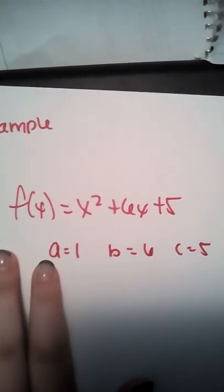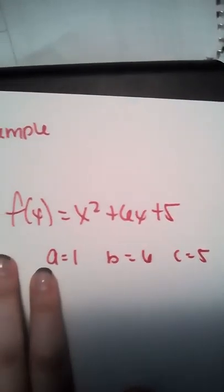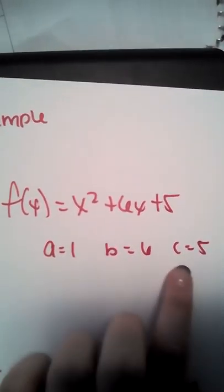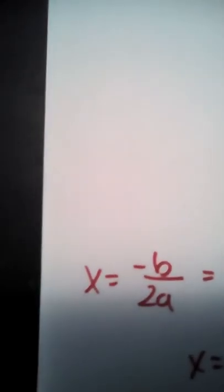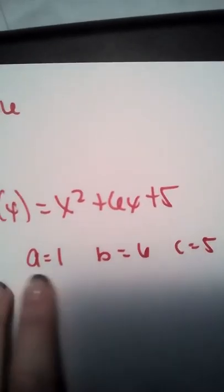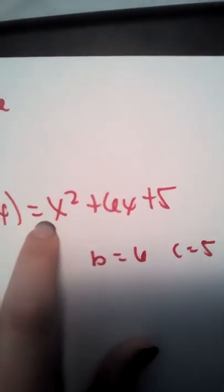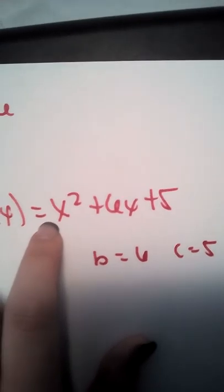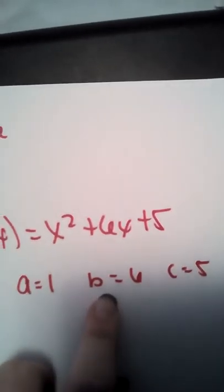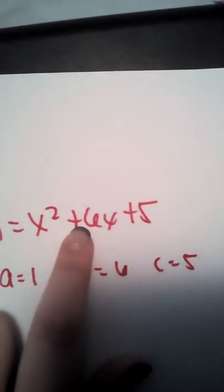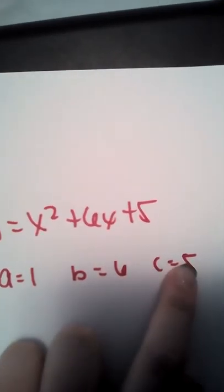To solve this equation, we must find the coefficients first. A, B, and C to later on enter it into this equation. Our A is 1 because there is no number in front of the x, which equals 1 always. Our B is 6 because of the number in front of this value. And our C is 5.